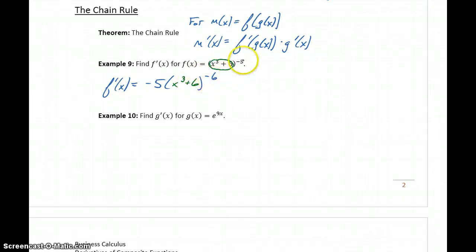Following the power rule, the exponent comes down as a factor in front, the original exponent gets reduced by 1, and then we multiply by the derivative of that interior function.